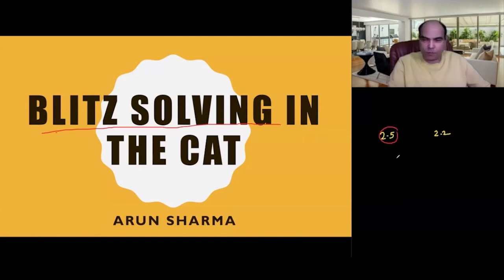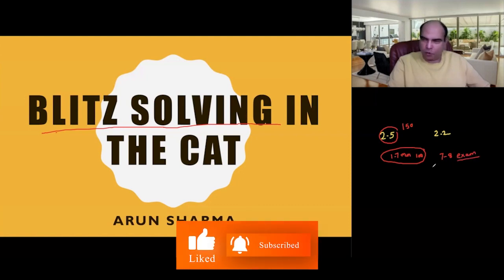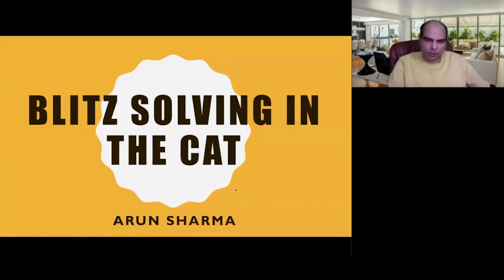If I can find seven or eight questions during my exam where I can do this kind of blitz solving, my attempts will automatically go up. If my attempts go up, my scores will automatically start going up. Blitz solving is very important in the CAT.